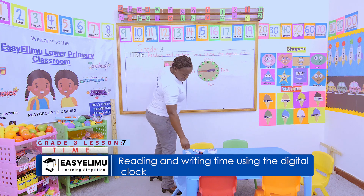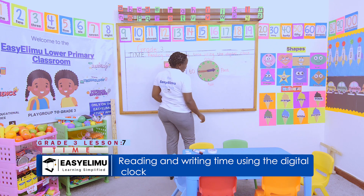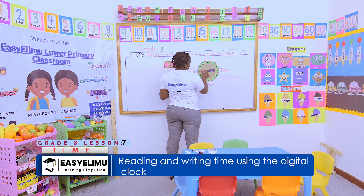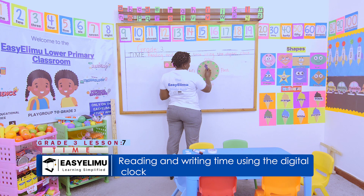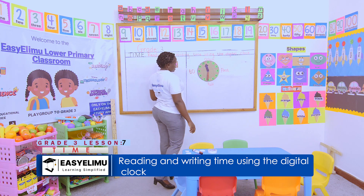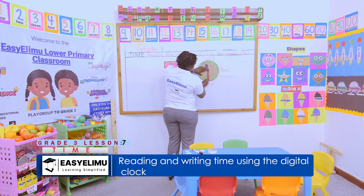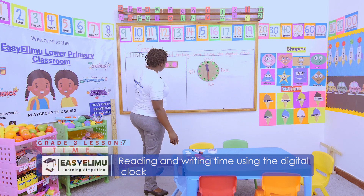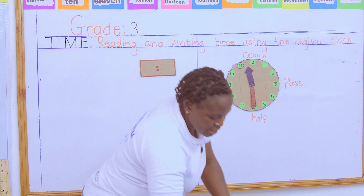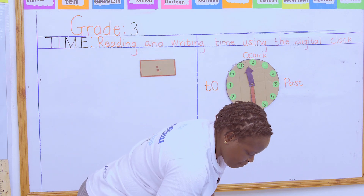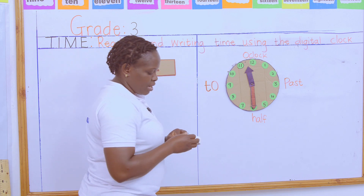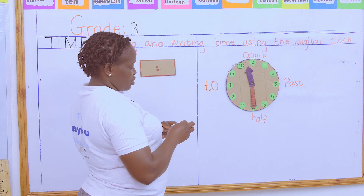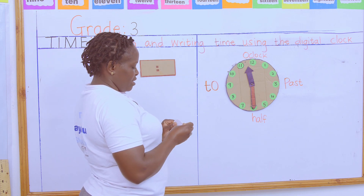Now I want someone to tell me this time on the digital clock face. Half past eleven. How do you represent that on the digital clock face? We said half means thirty. One hour equals sixty minutes, so half will be represented by thirty.